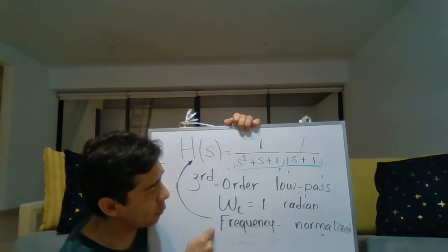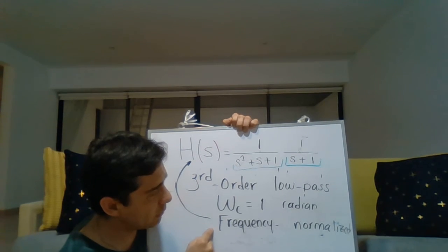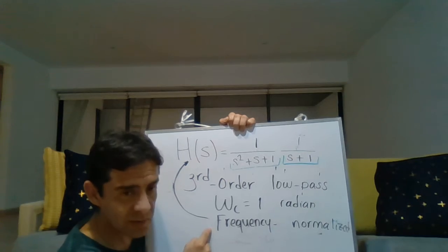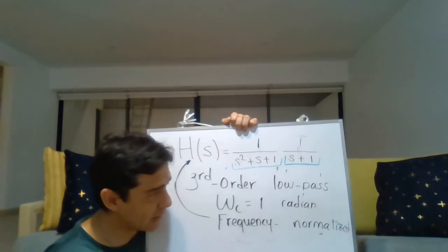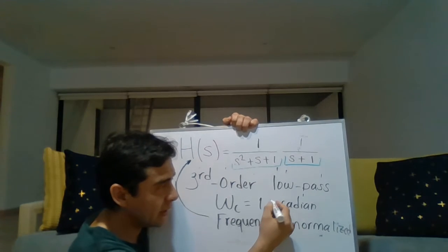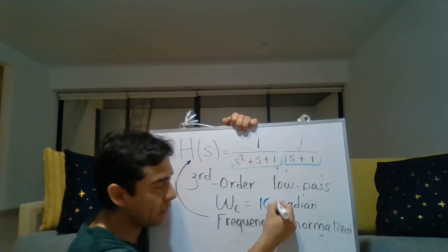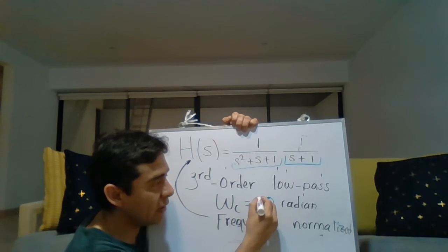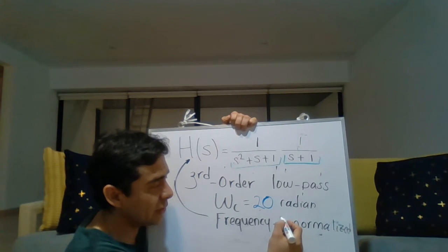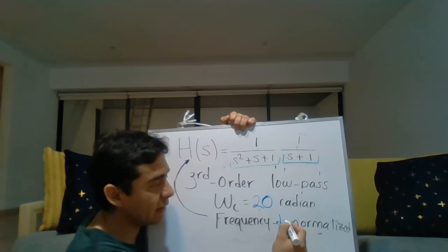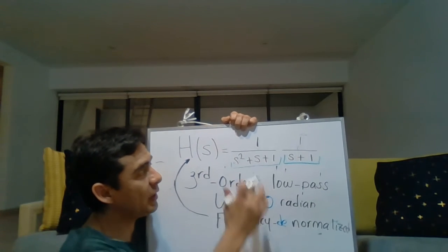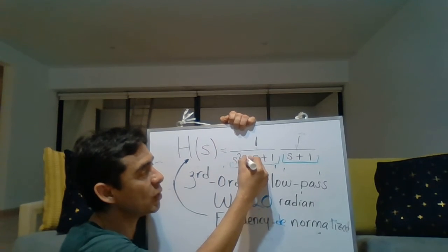If the question is whether this is a frequency-normalized circuit, the answer is yes. Now let's say we are told we are interested in a cutoff frequency of 20 radians and we are given the following expression for the frequency-normalized version.